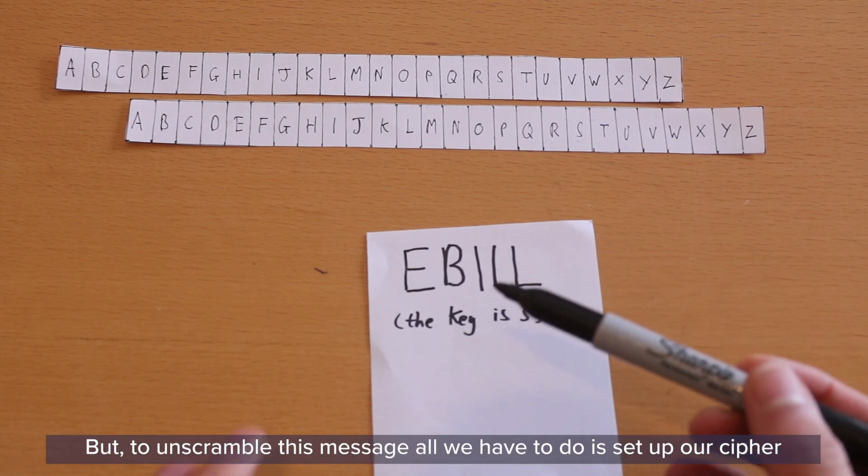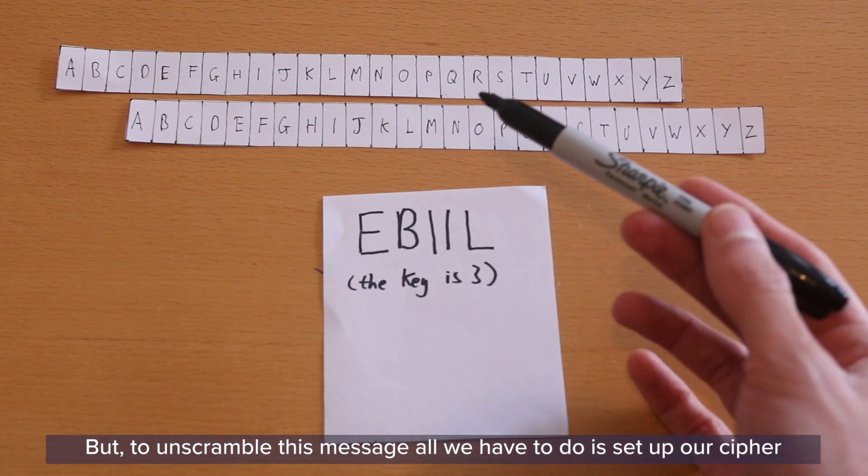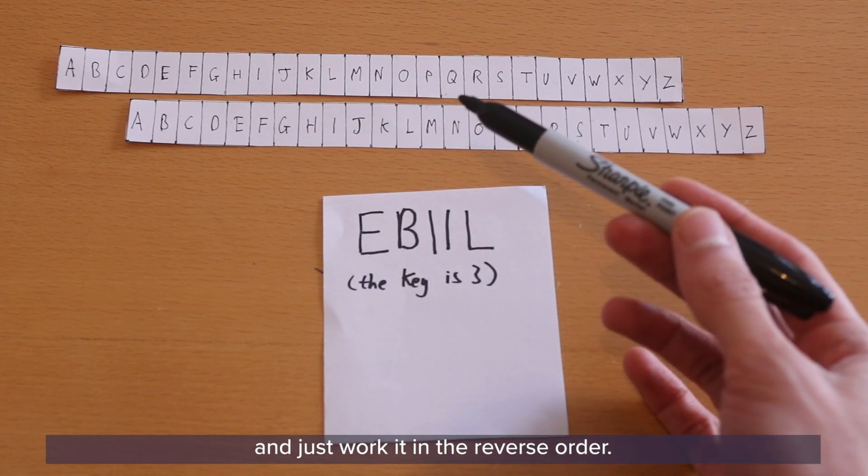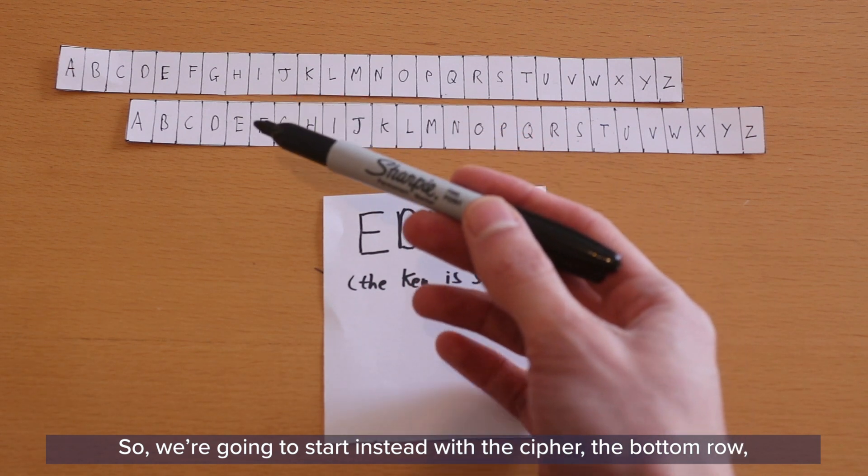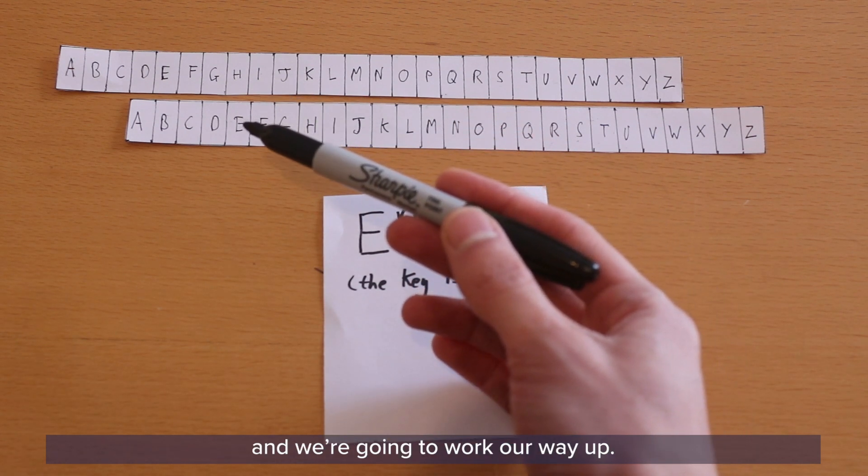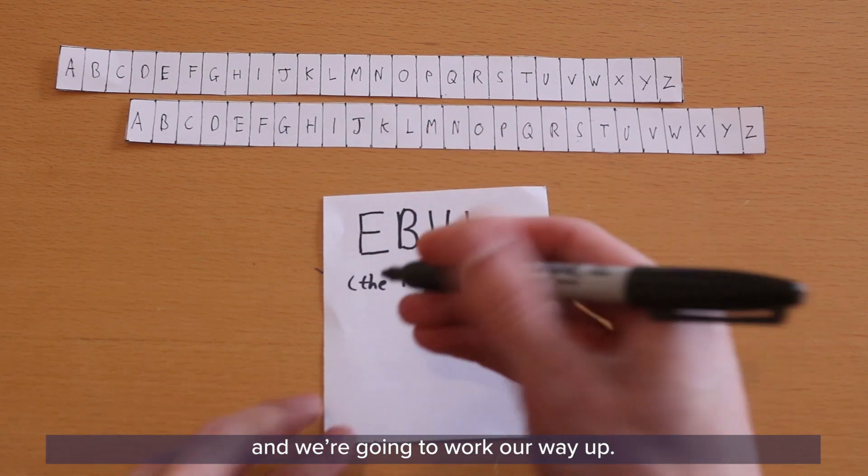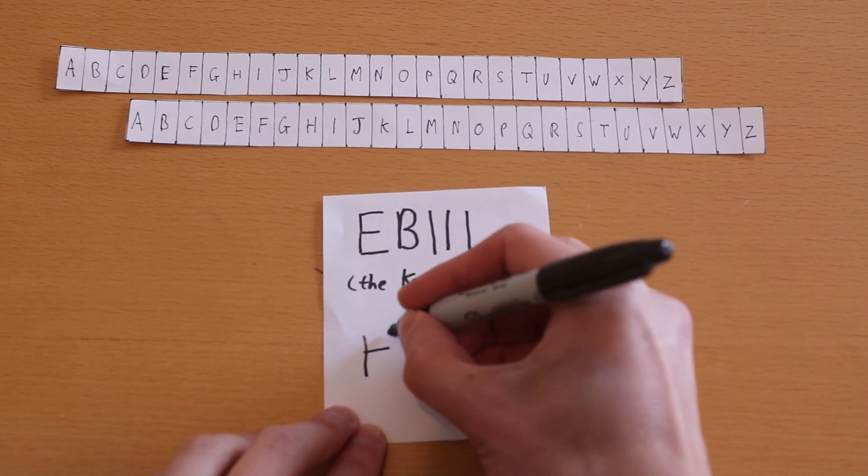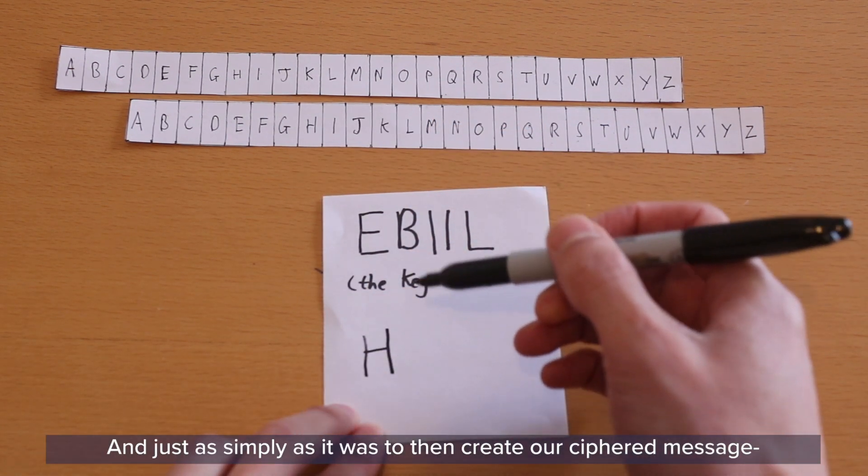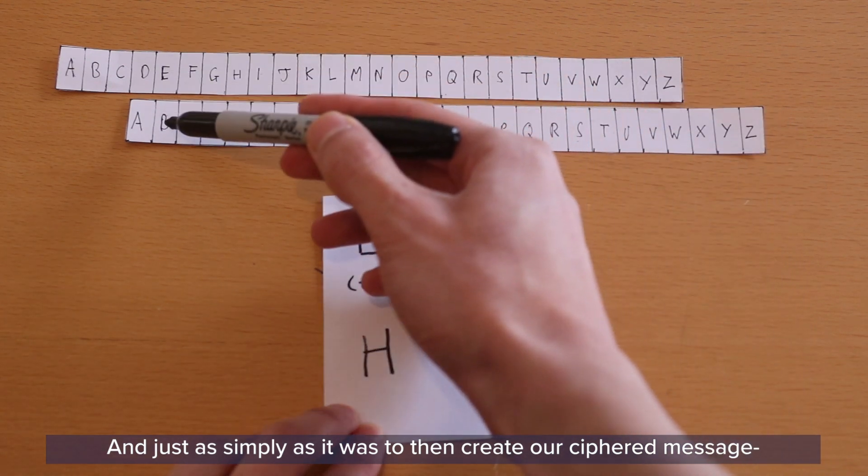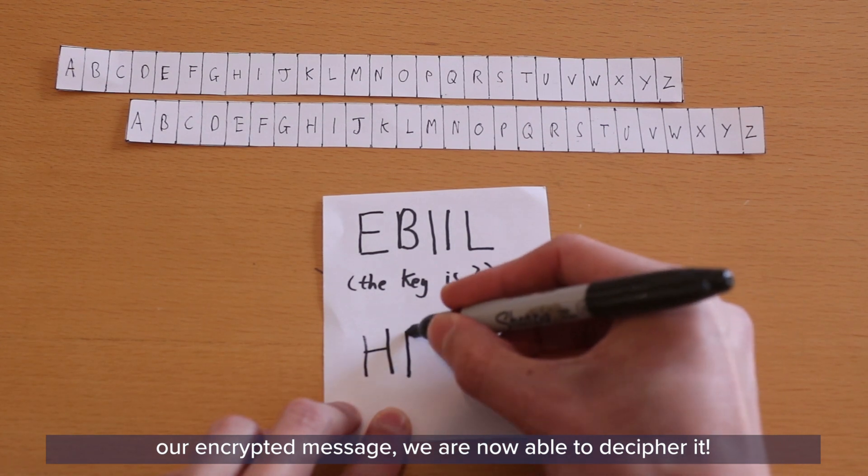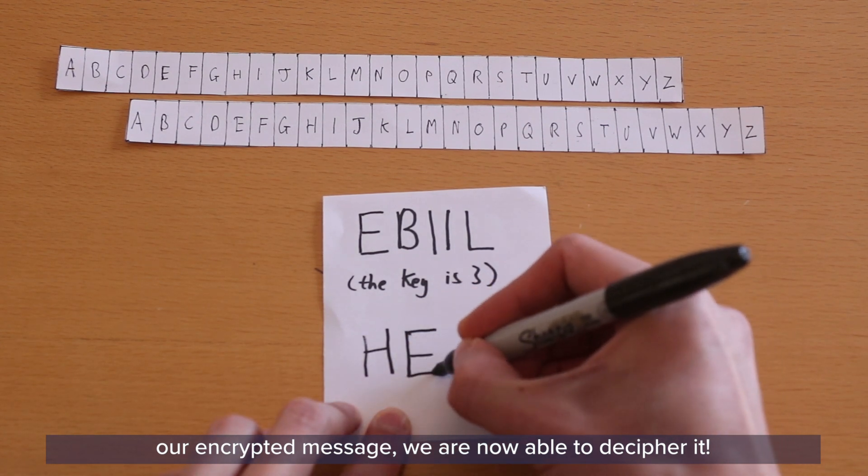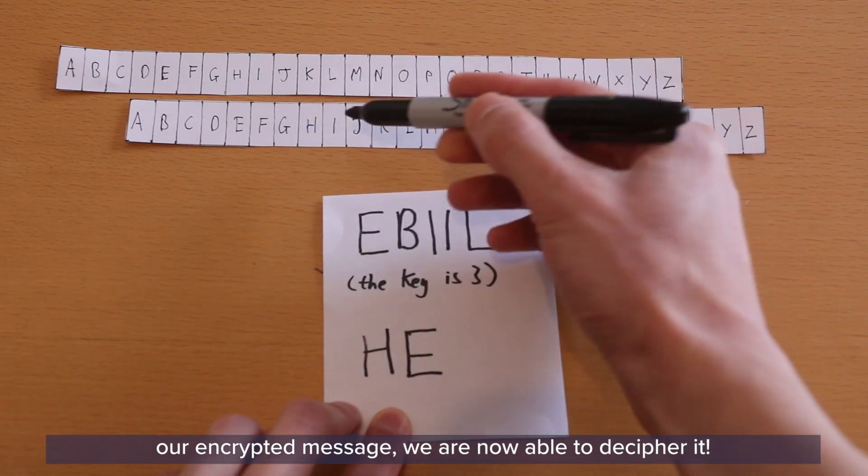But to unscramble this message, all we have to do is set up our cipher and just work it in the reverse order. So we're going to start instead with the cipher, the bottom row, and we're going to work our way up. And just as simply as it was to then create our ciphered message, our encrypted message, we are now able to decipher it.